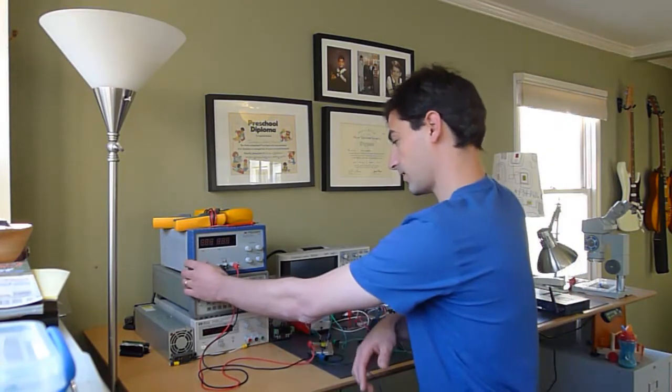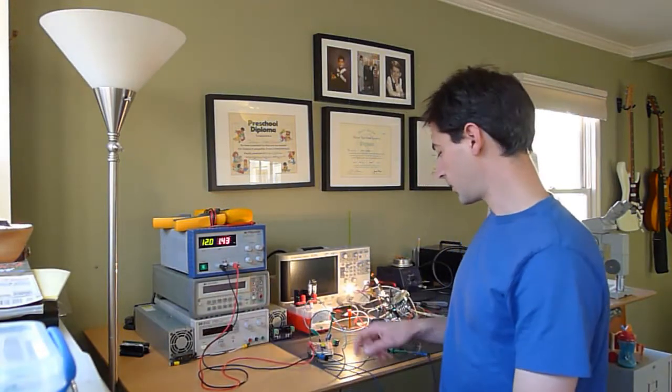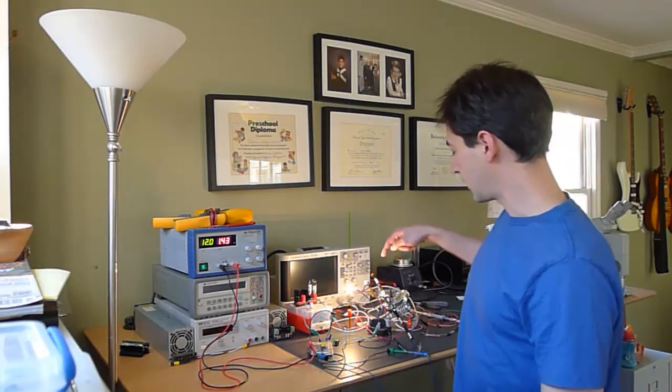So assuming this function is linear, which I don't know is true, should be one fifth the time. If it's 30 seconds, it should be about 6 seconds. We can test that right now. Turn it on. Hit the button.